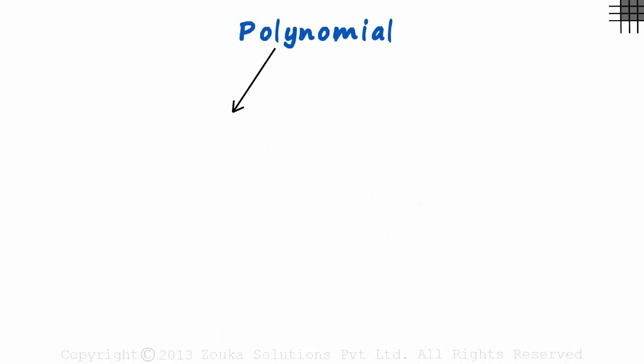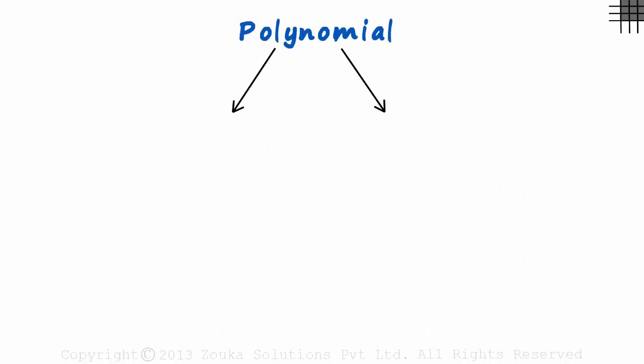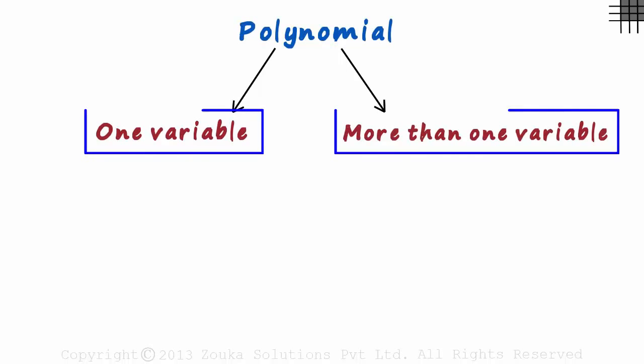There can actually be just two broad categories of polynomials. The first category which has just one variable and the second one which has more than one variable. That's it!